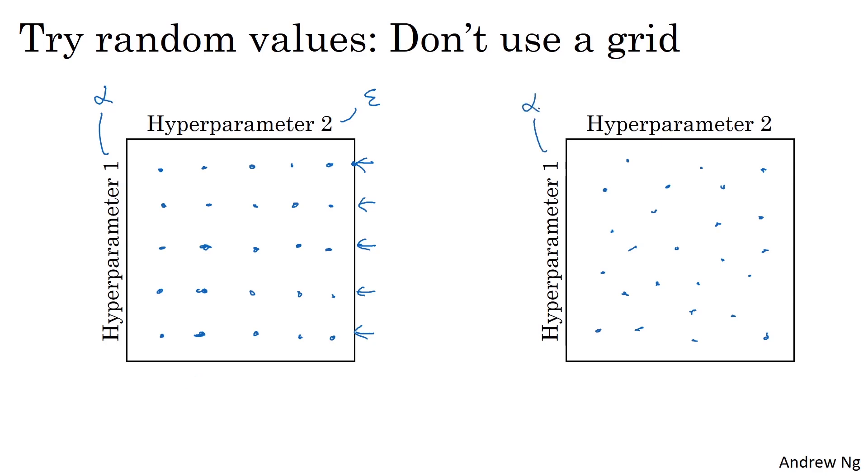Whereas in contrast, if you were to sample at random, then you will have tried out 25 distinct values of the learning rate alpha. And therefore, you'd be more likely to find a value that works really well.